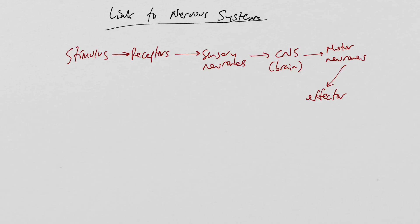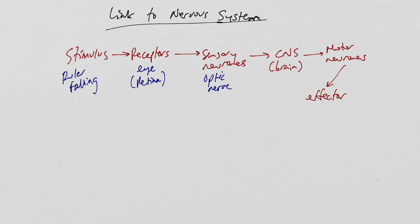The stimulus is the ruler falling. The receptors are in your eyes — specifically in the retina. The sensory neurons are your optic nerve, sending information to the brain. The specific part of the brain involved in fine coordination of muscles is the cerebellum. Motor neurons carry the information down your arms to the muscles — the effectors — in your hands or arms. They could go into that level of detail, so make sure you can link your nervous system knowledge to the required practical.